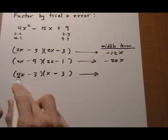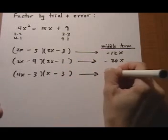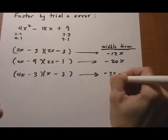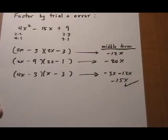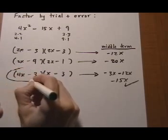Middle term minus 3x minus 12x. So it's minus 15x. And that's what we're looking for. So we know that this is the right factoring.